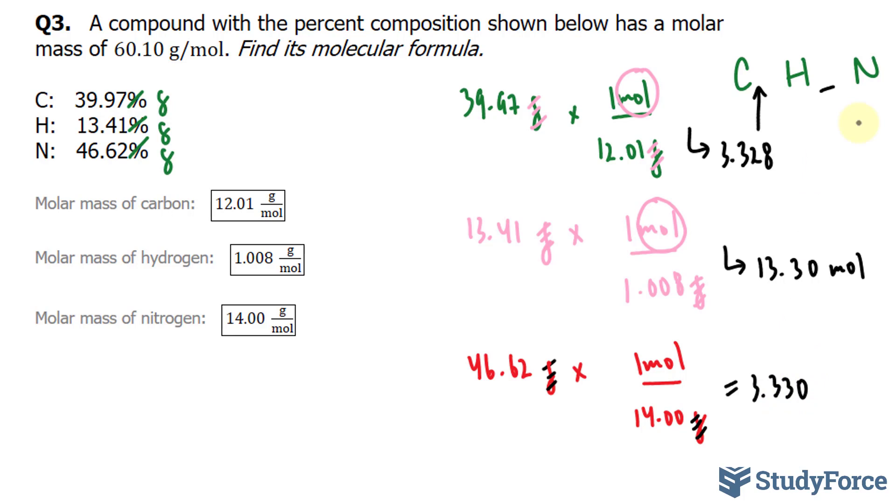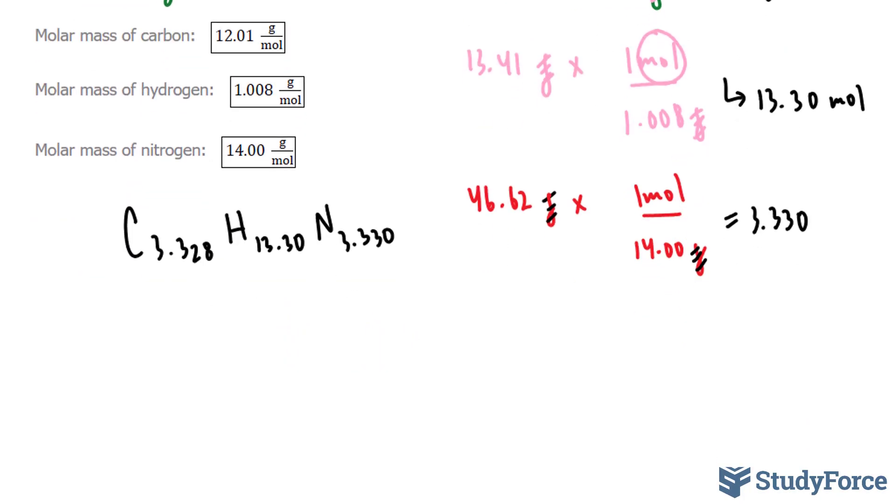So let me write down my formula. The way I have it, I have C 3.328, H of 13.30, and N of 3.330. Of these three numbers, the smallest is this one. So I can divide each of these subscripts by 3.3. I know if I divide this by 3.328, it becomes a 1, and I know if I do the same thing here, it becomes a 1.